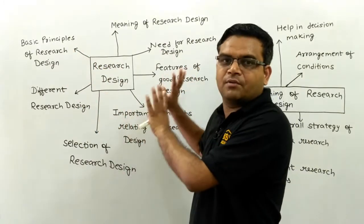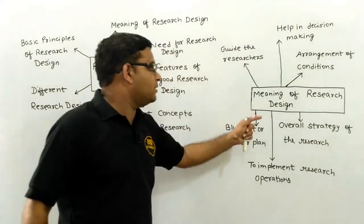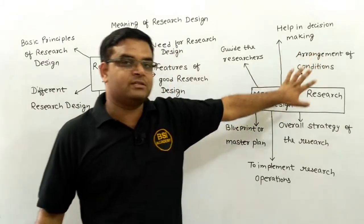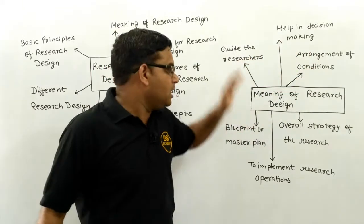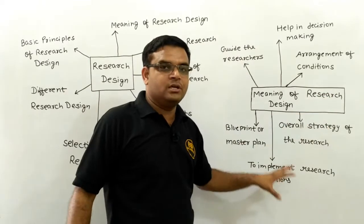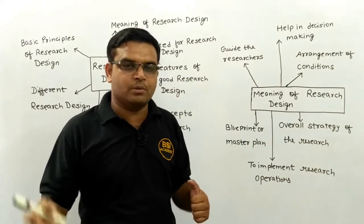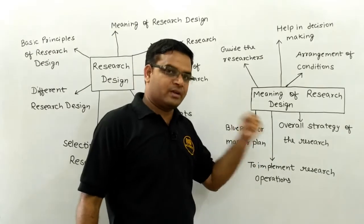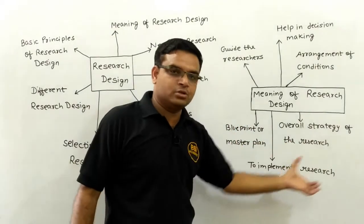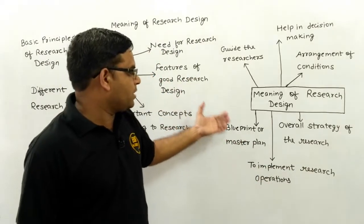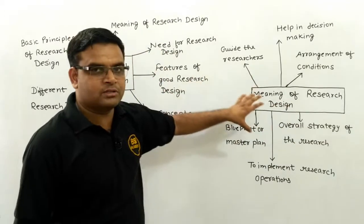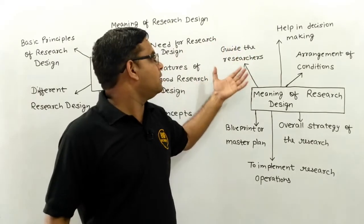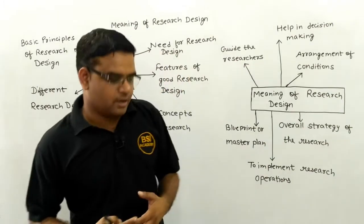This is all about research design and I will definitely cover all these points in the future. To summarize the meaning of research design: it is the arrangement of conditions, your alternatives, and different types of problems under research design. It is also the whole strategy for your research, because research is always time-bound and we need a strategy to complete it within time. It is used to implement research operations, and it is the blueprint or master plan for our research. It is also the guideline or mind map for researchers, and it helps in taking decisions in our research.